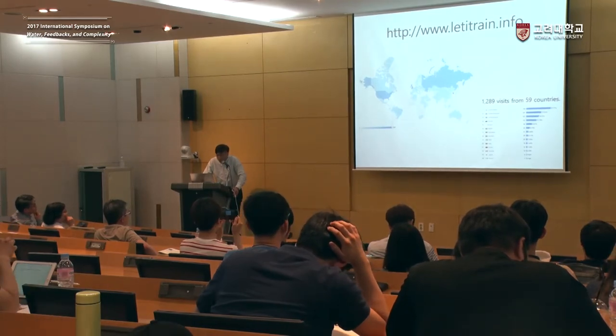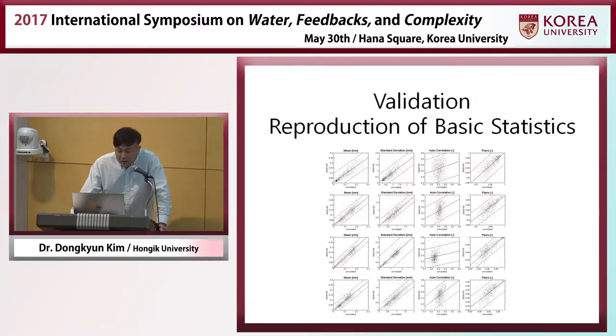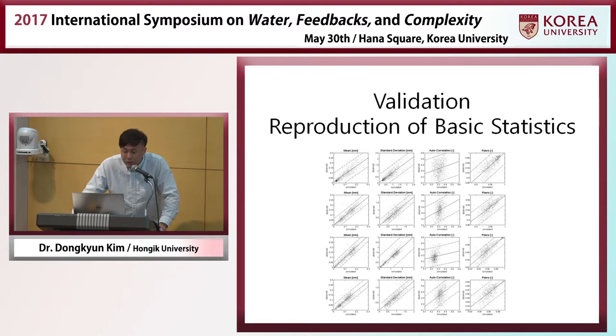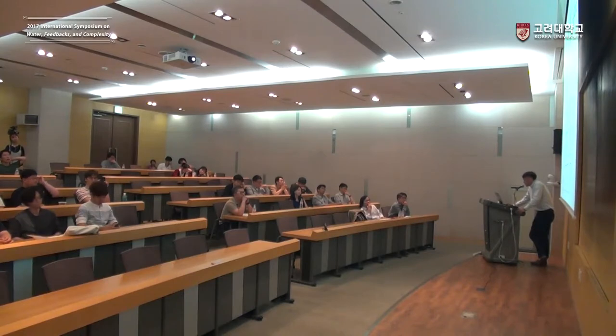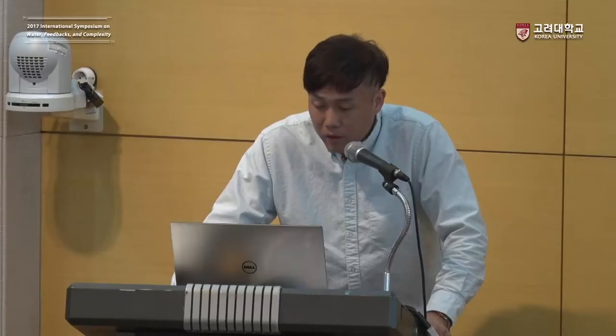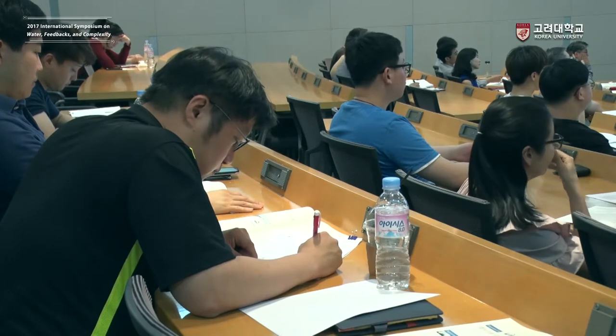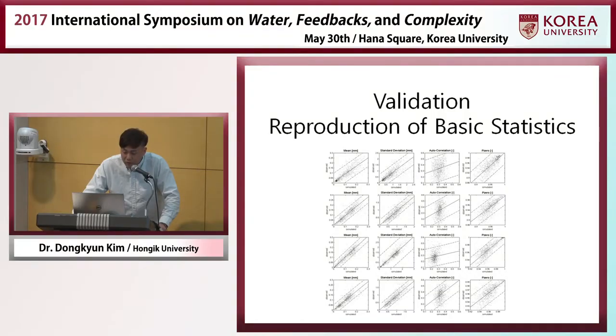Last year, we had around 1,300 visits from about 60 countries — South Korea, the United Kingdom, the United States, Russia, Brazil, Germany, and so on. This is the validation. The x-axis is the statistics of the simulated synthetic rainfall and the y-axis is the observed rainfall, showing mean, variance, autocorrelation, and probability of zero rainfall at hourly, three-hourly, 12-hourly, and 24-hourly aggregation levels. The scatters are concentrated near the one-to-one line, meaning the statistics of the observed and synthetic rainfall are quite similar.